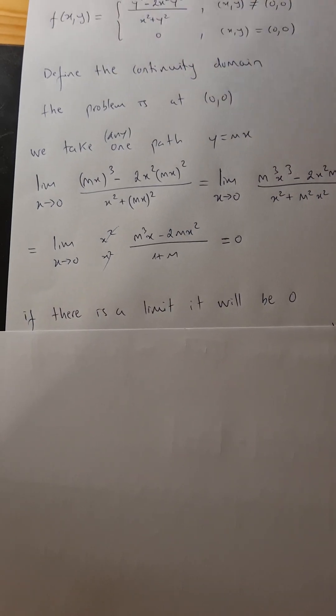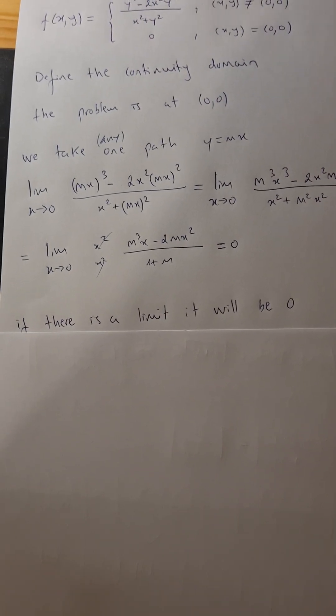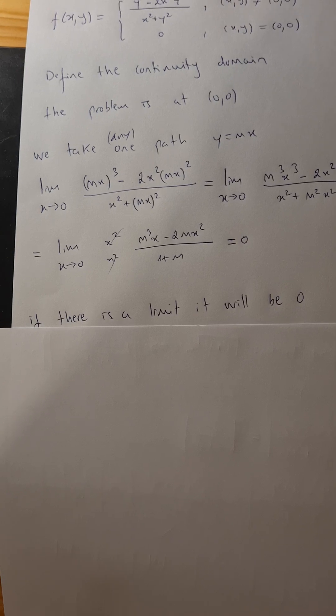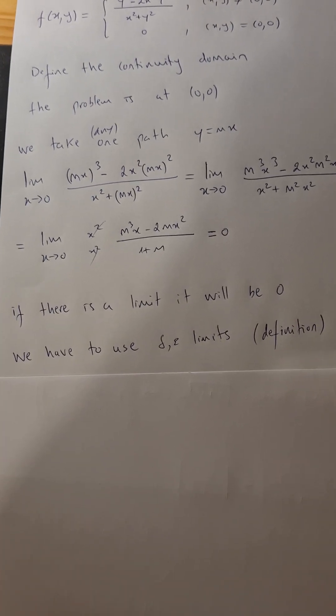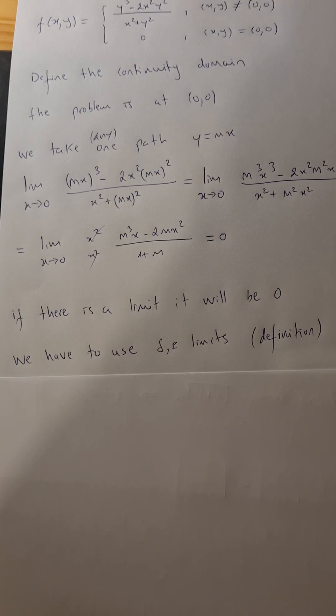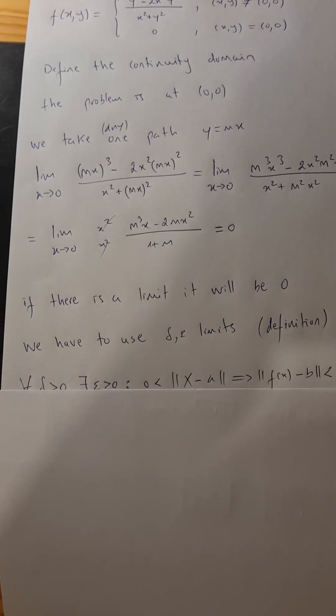So that means what? If there is a limit, it will be 0, right? So now we have to use delta epsilon limits, what is usually called a definition.